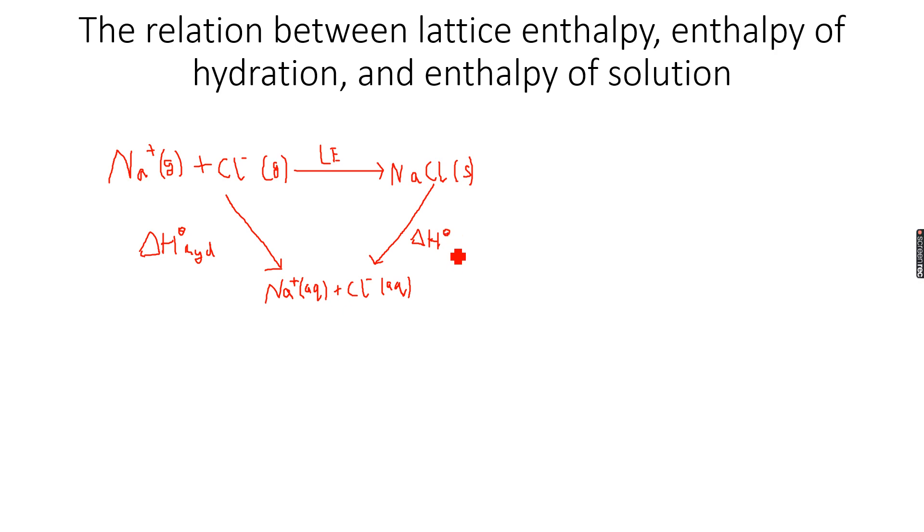Now we again have a case of direct and indirect routes. If we start with the gaseous ions and go to the aqueous ions, this is one direct route—ΔH_hyd. Or I first go from the gaseous ions to the ionic solid, which is the lattice energy, and then to the aqueous ions, which is the enthalpy of solution. This is the indirect route. But as Hess's law states, the total energy change will remain the same, so I can say ΔH_hyd equals LE plus ΔH_sol.